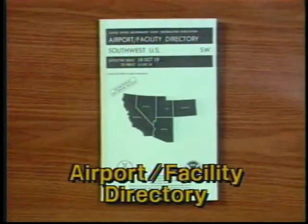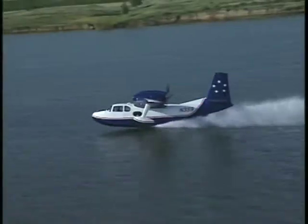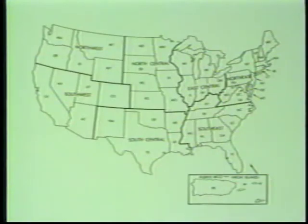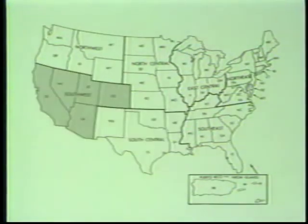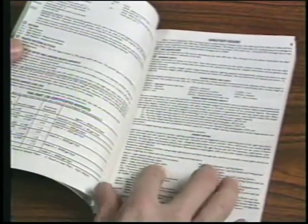Now let's look at the Airport Facility Directory. This publication contains facts about all public use airports, heliports, and seaplane bases. It is published in a number of volumes with each one covering several states in a given region. To help explain the contents, let's look at some typical entries from the Southwest directory. Each volume has a directory legend that helps you interpret the abundance of information. As you gain more experience in using the Airport Facility Directory, you'll find the entries easy to read.